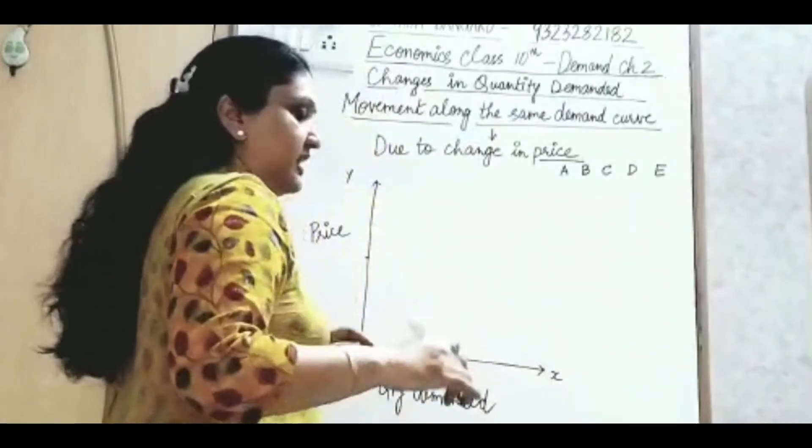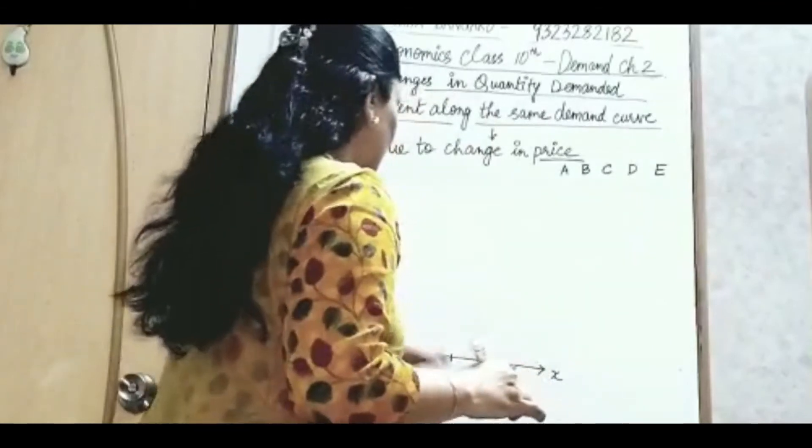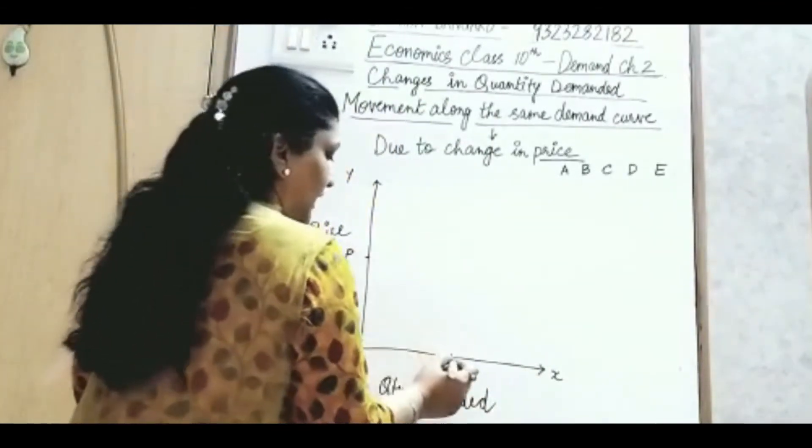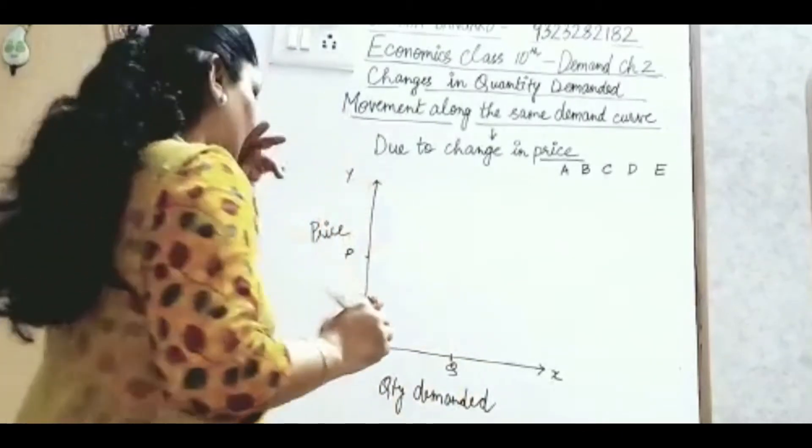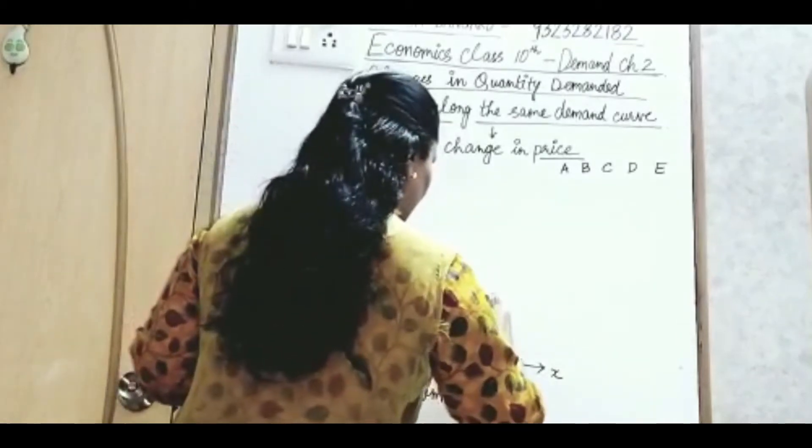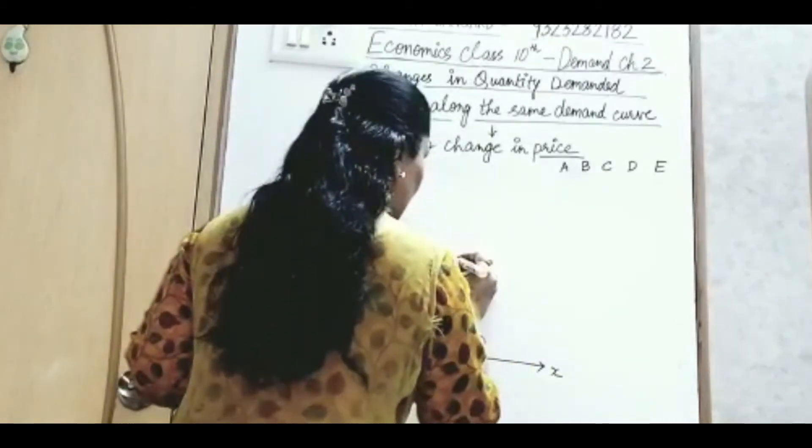Now let us take an example. X is quantity demanded and Y is price. So P price per Q quantity, for example demand. So if I mark this, then it will be here.